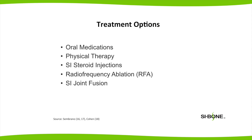Once the source of the patient's pain has been established to be the SI joint, the non-surgical options are as follows: oral medications, physical therapy, steroid injections, and radiofrequency ablation. If the patient continues to have pain despite these therapies, they may be considered for a minimally invasive SI joint fusion.